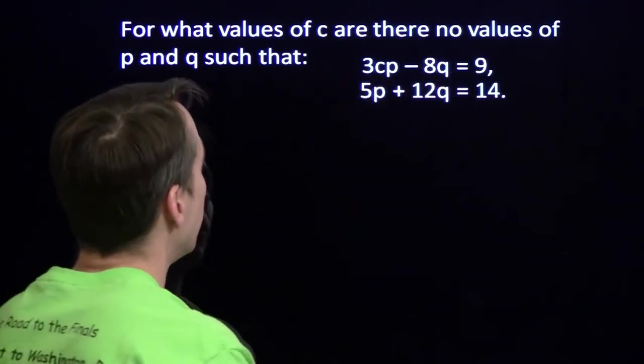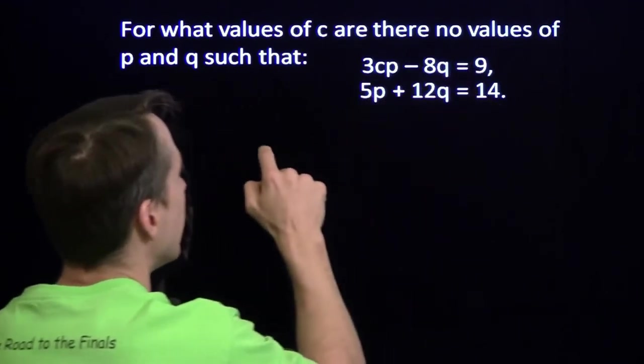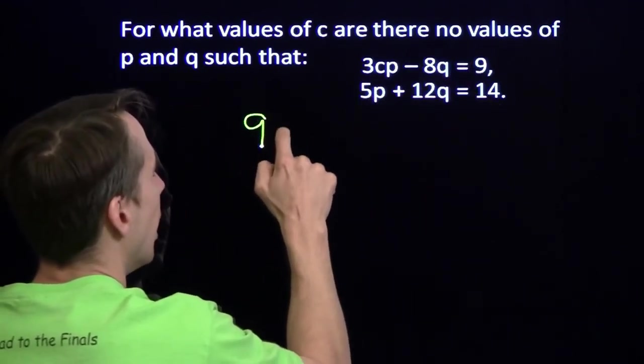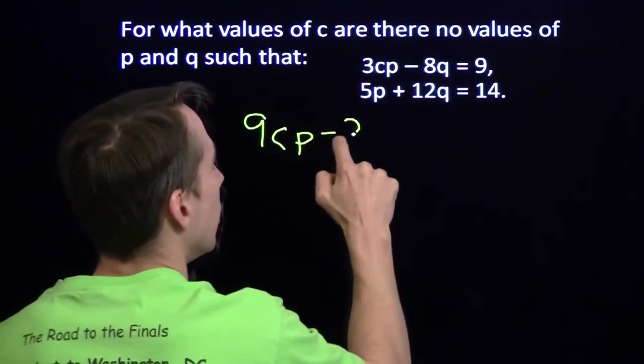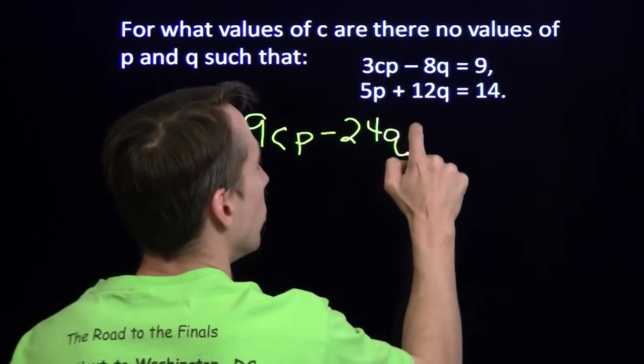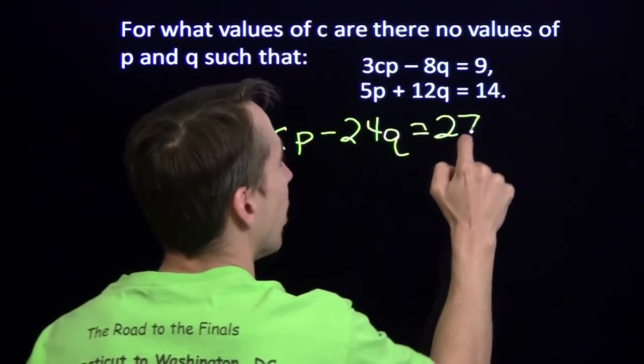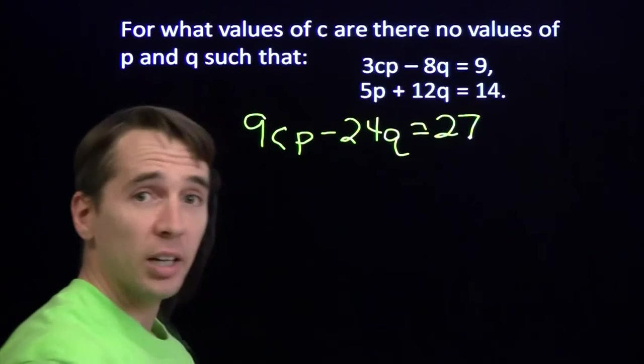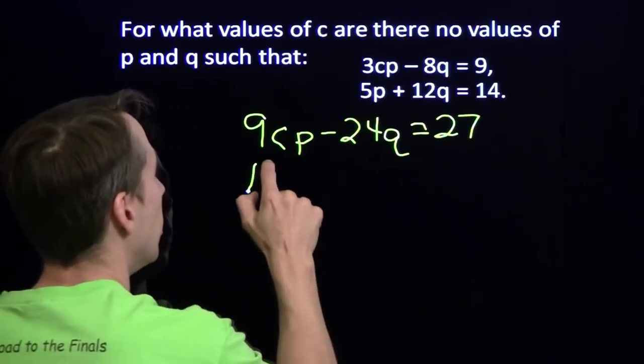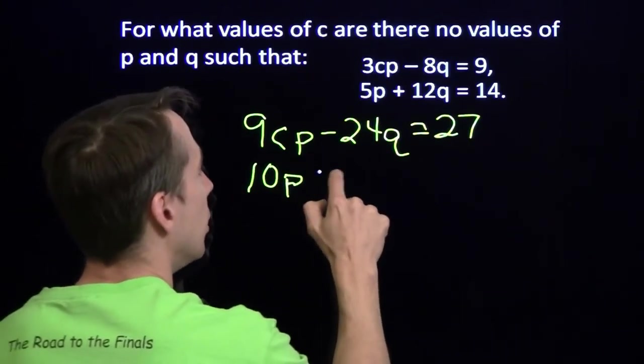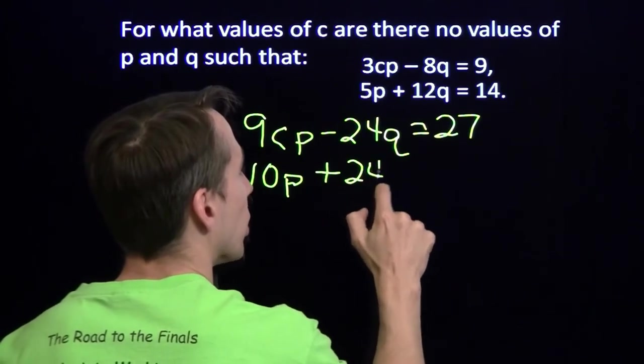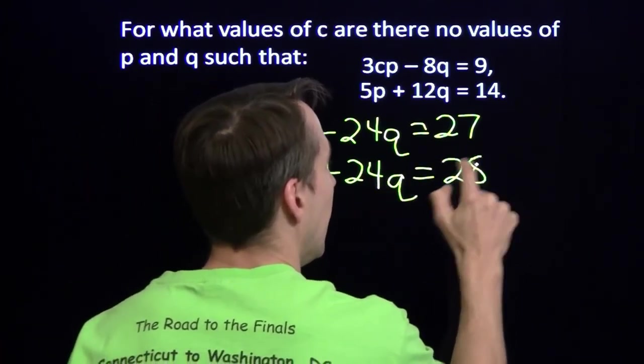So we'll take the first one, the first equation first. We'll multiply both sides by 3 and we'll get 9cp minus 24q equals 27. We'll multiply both sides of the second equation by 2. We'll get 10p plus 24q equals 28.